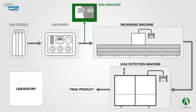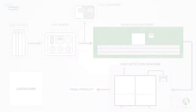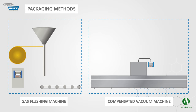After achieving the perfect mixture, the gas mixture at the required pressure will enter the next step, which is the packaging step. The food product can be packed with different techniques depending on the machine we use.